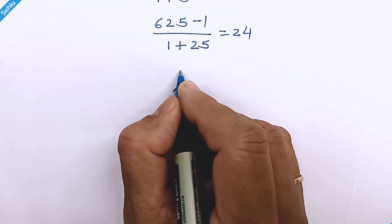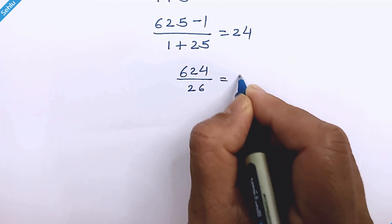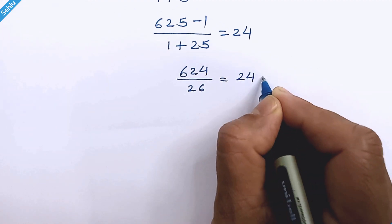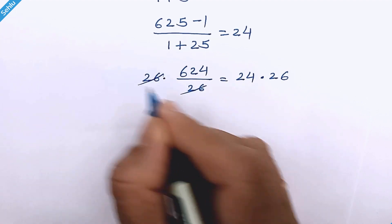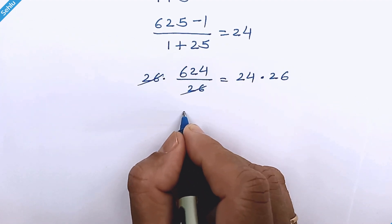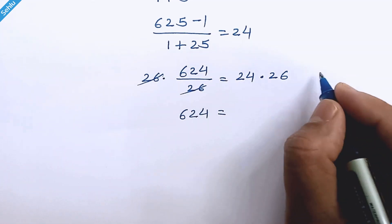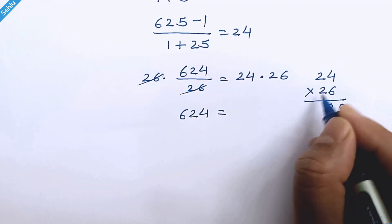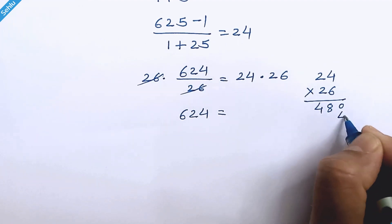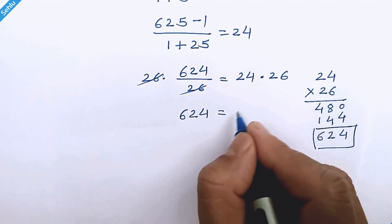So we have 624 over 26 is equal to 24. Multiply with 26 both the sides. These two get cancelled out. So we have 624 is equal to 24 multiply by 26. 624.